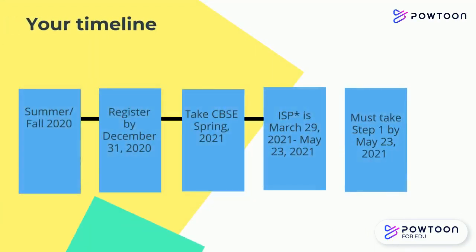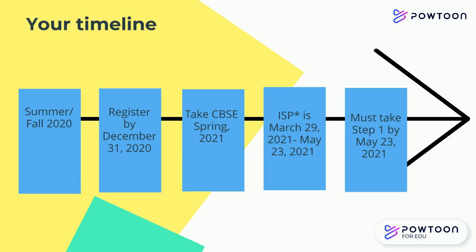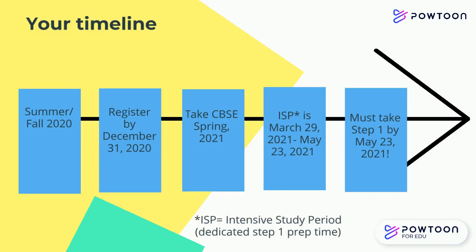Here's a timeline from now until your Step 1 exam. It is recommended that you register for your exam by December 31, 2020. I will run a few live Step 1 sessions during the fall, one of which will cover the registration process and requirements. A CBSE practice exam will be administered in the spring of 2021, and your ISP will take place from the end of HC, which is March 29, 2021, to May 23, 2021. You must take your exam by May 23 because transitions will start on Monday, May 24, 2021.